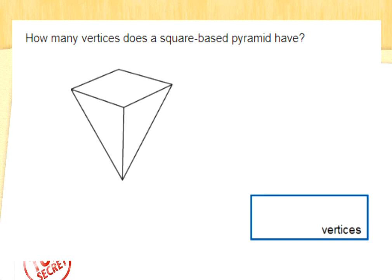How many vertices does a square base pyramid have? They've drawn the square base pyramid this way around so you can count all the vertices — corners, if you please. A vertex is where two straight edges meet. Let's put circles around and find them: one, two, three, four — and don't forget the one at the top. That's five vertices. Well done special agents.